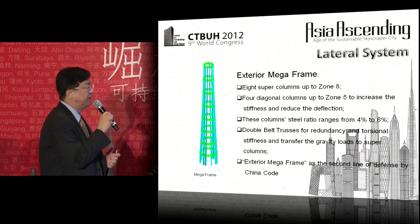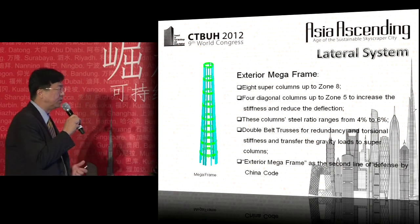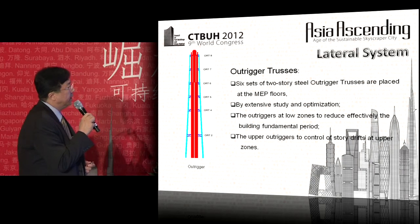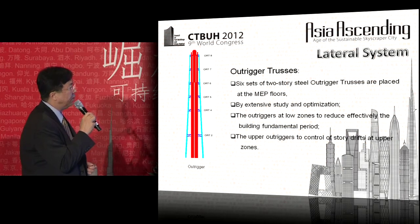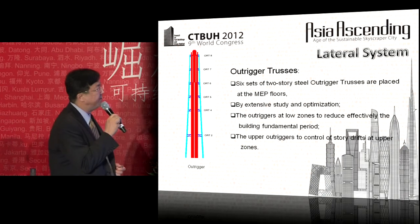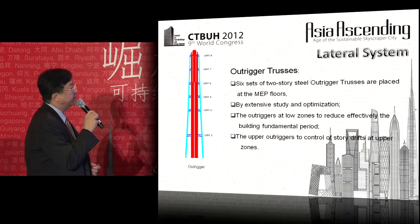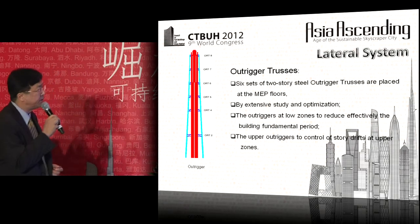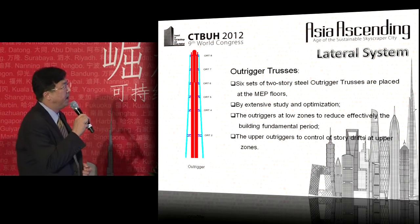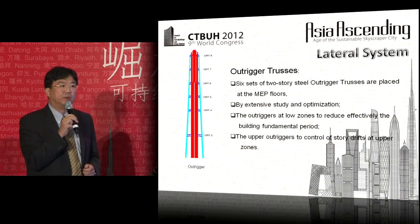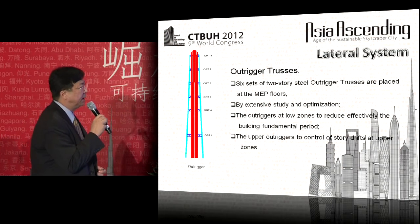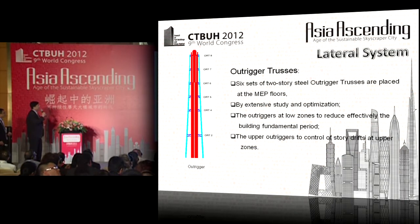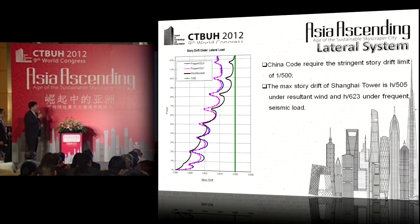The gravity loads in each zone are well transferred to the supercolumns. The third component is the outrigger trusses: six sets of two-story steel outrigger trusses placed at MEP floors. By using outrigger trusses, we effectively tune the building's fundamental period — outriggers at low zones reduce the fundamental period, while upper outriggers control story drifts at upper zones.